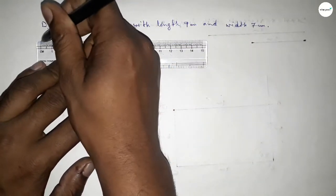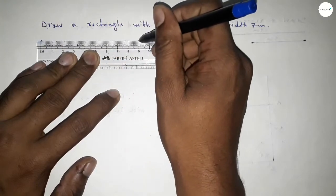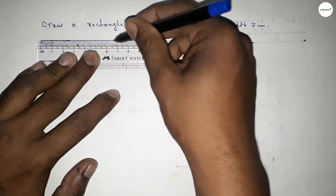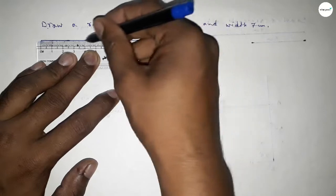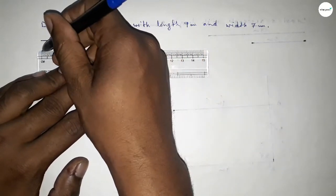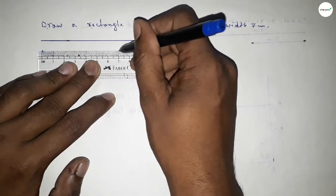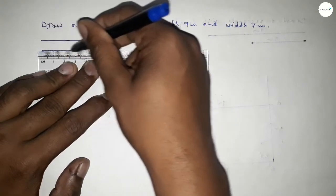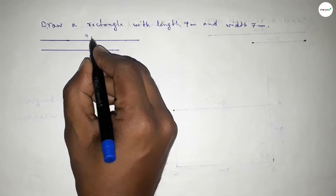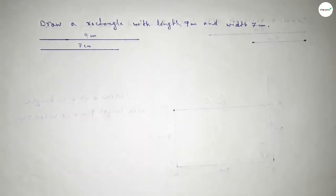First of all, we have to draw a line of length 9 centimeters, and then drawing another line of length 7 centimeters. So this side is 9 centimeters and this side is 7 centimeters.